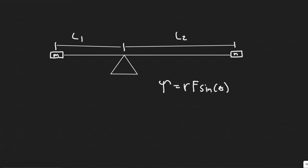In this problem we're told two blocks, each of mass m, are attached to the ends of a massless rod which pivots as shown in the figure. Initially the rod is held in the horizontal position and then released. We need to calculate the magnitude and direction of the net torque on this system when it is first released.